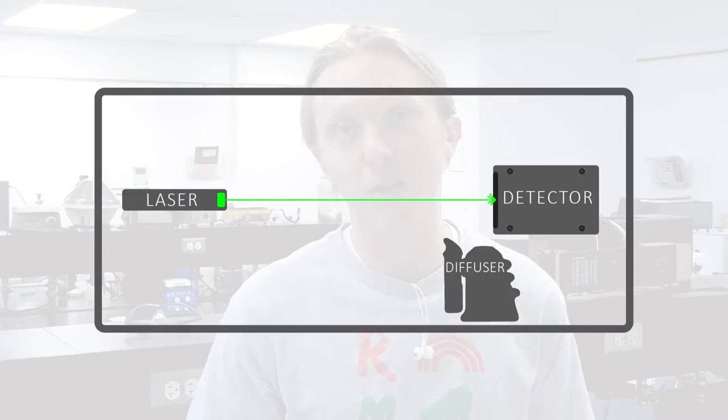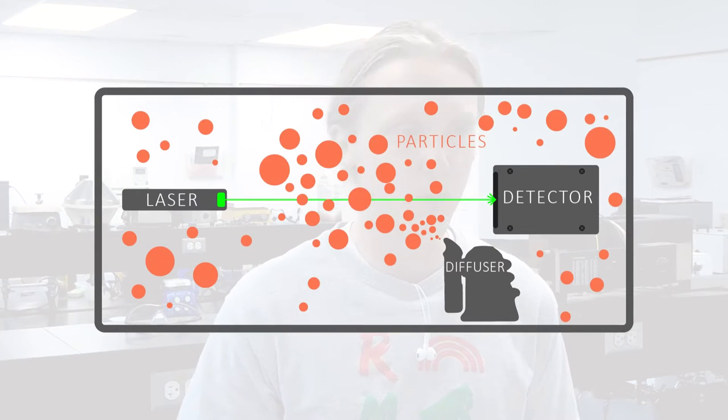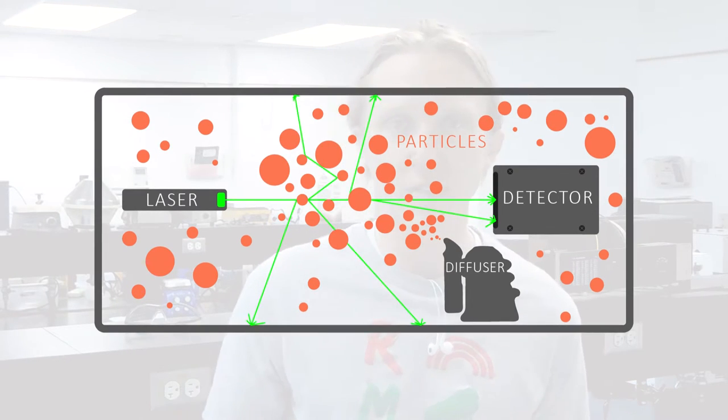What happened was, each time I shot a laser through, the particles would bounce the laser light all over the place. Some would bounce off onto the container, and some would make it back to the detector.